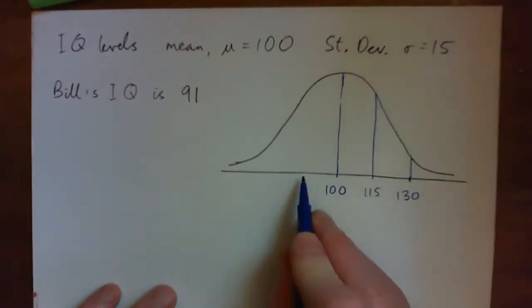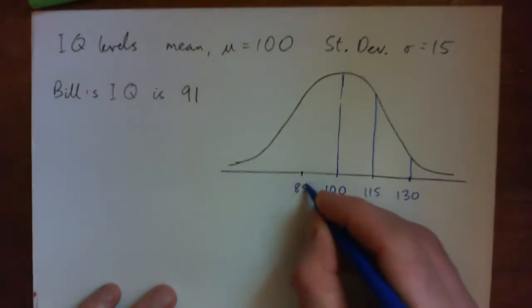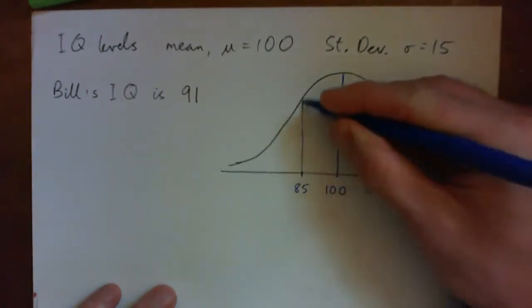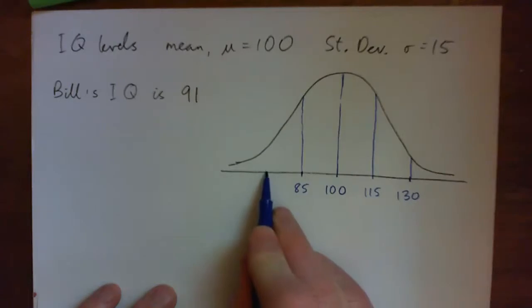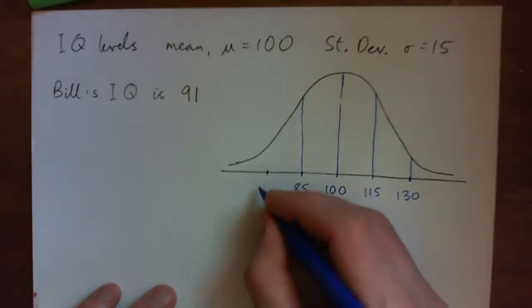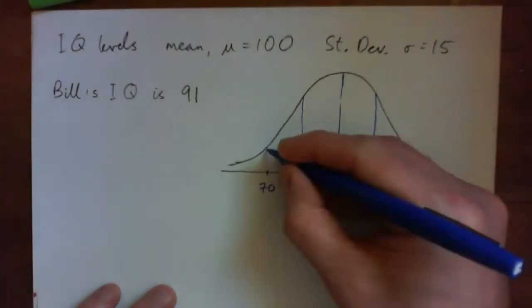If we go down one standard deviation, we get to 85, right? And if we go down two standard deviations, we get to 70, you with me there?